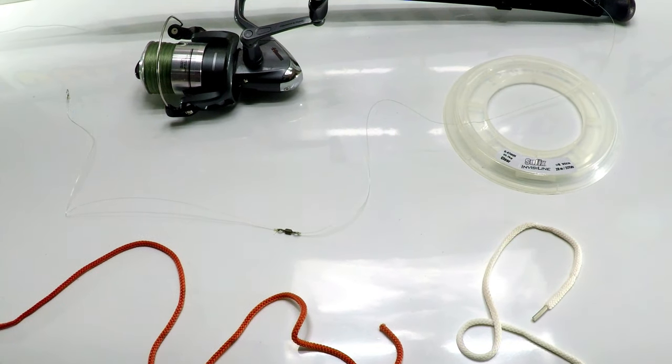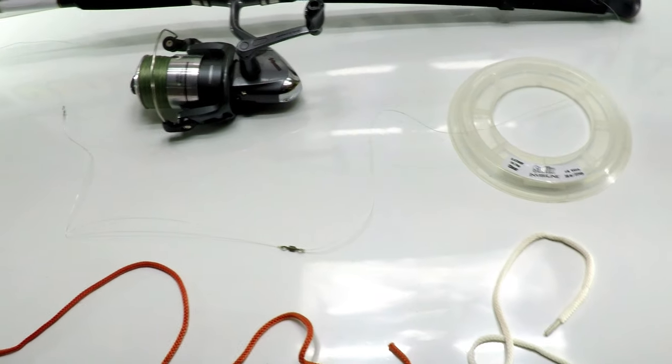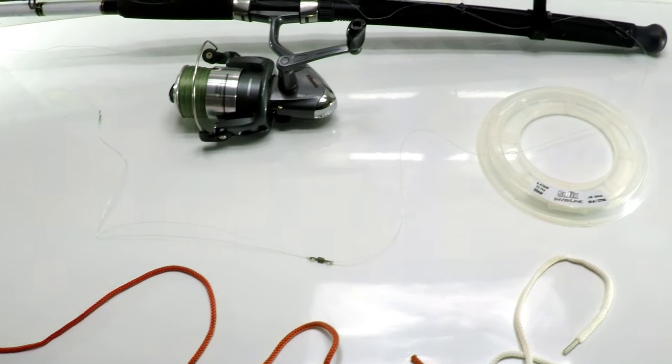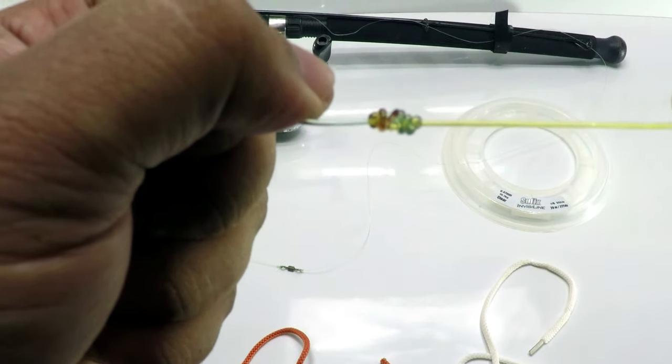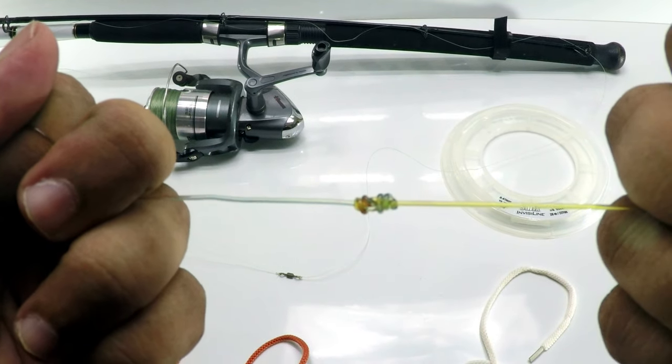Welcome to our channel, Raptor Fishing Tackle. Today we're going to talk about the blood knot, which is a very strong knot used to connect lines.